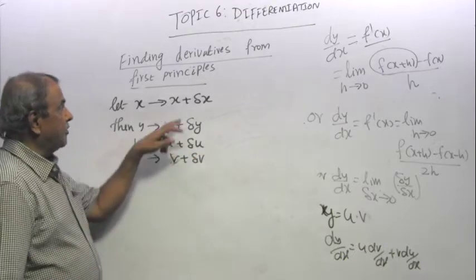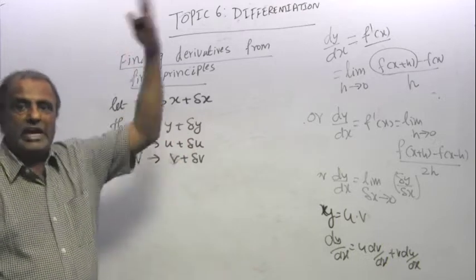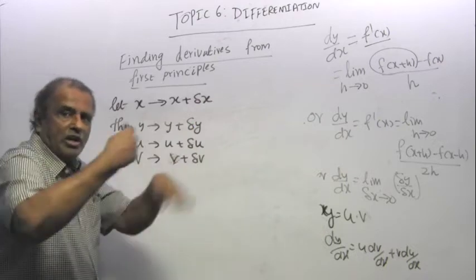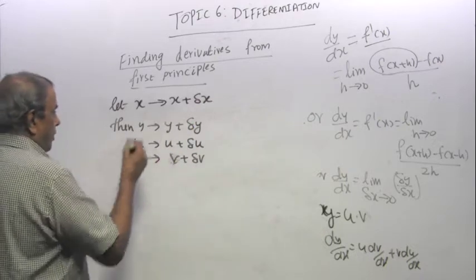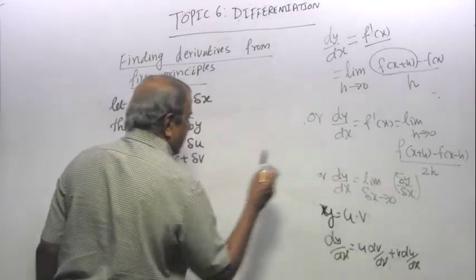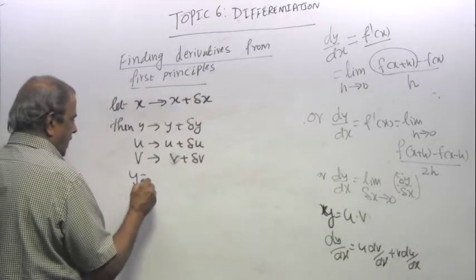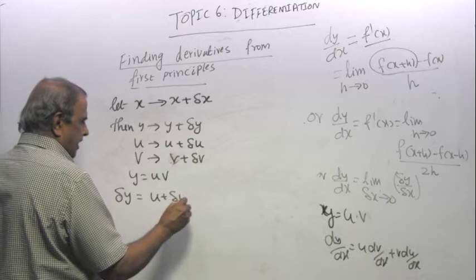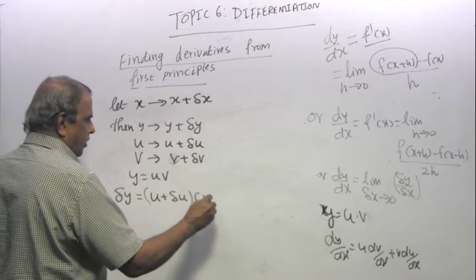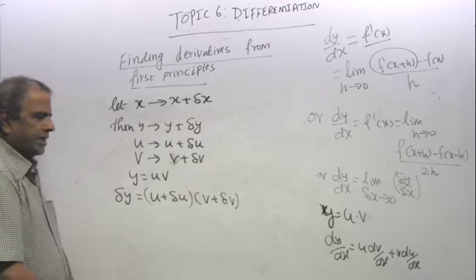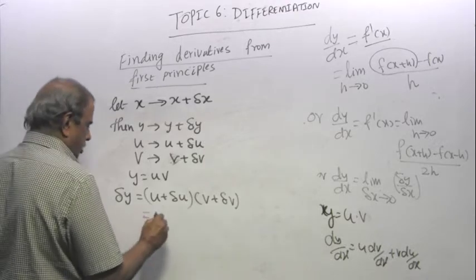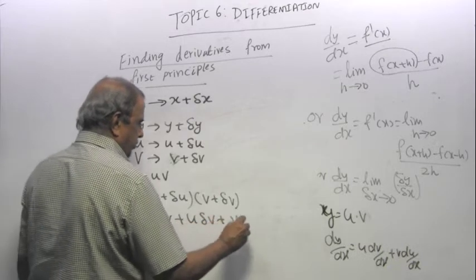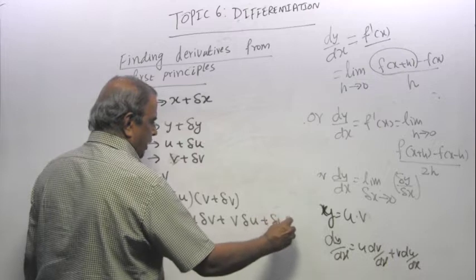The difference is y is a function of x. y is y itself because we are going to use dv by dx, whereas this u and v are functions of x. So how do you find delta y? Look, y equal to u times v. So delta y is u plus delta u times v plus delta v, correct? That will be uv plus u delta v plus v delta u plus delta u delta v.